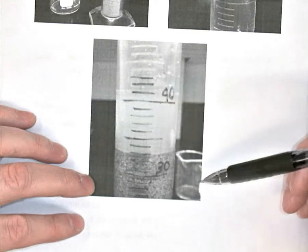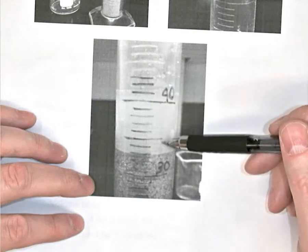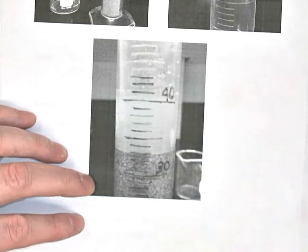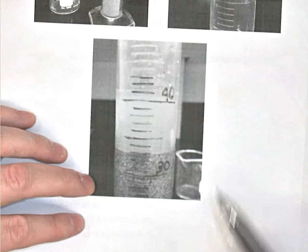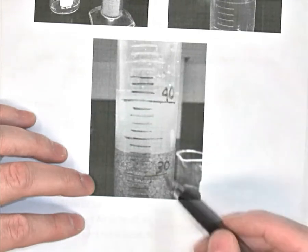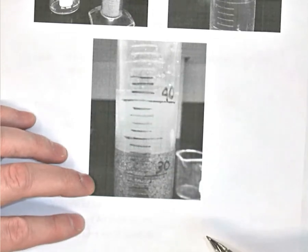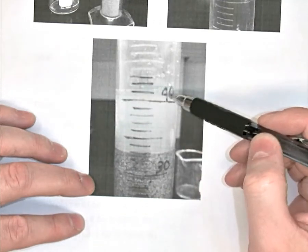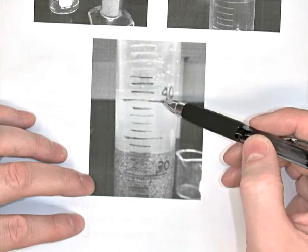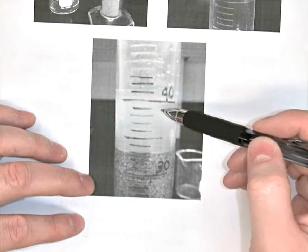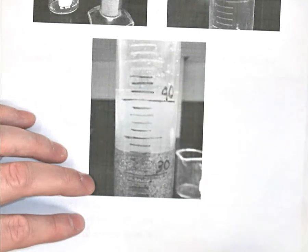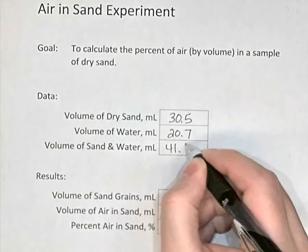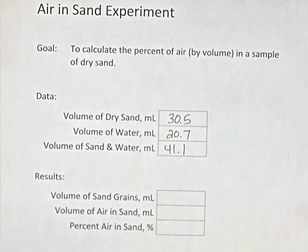Now the surface level of the water has gone way up. It's now over 40 milliliters. The water level is being raised here, it's being displaced, because the sand grains are taking up the space that used to be water. So the displacement of the water is due to the sand grains that are down here sitting at the bottom of the cylinder. So right now the meniscus of the water level here is between 40 and 50. It's a little bit more than 41 milliliters. It's pretty close to 41 though. So we'll say 41.1 milliliters is the volume of the sand with the water together.